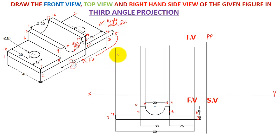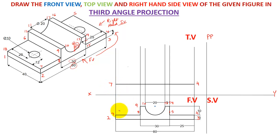Starting the top view: I make a horizontal line parallel to the XY line that cuts the projection lines from the front view. This could be my point 4 and this could be my point 7. You can see this will overlap here, so I take a projection from the front view towards the top view which meets my 4-to-7 line. When I see from the top, point 4 is visible and point 7 is visible, so I make this line.